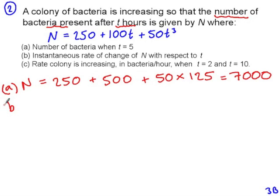In the second part of the question, we're asked to find the instantaneous rate of change of N with respect to T. This is a cue that we need to differentiate N with respect to T. So whenever you see instantaneous rate of change, then you need to differentiate. So we want dN by dt, which is 100 plus 150T squared.